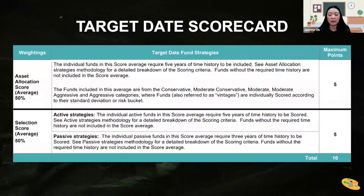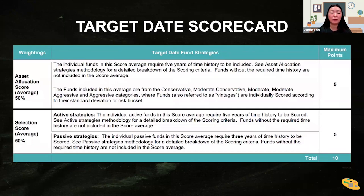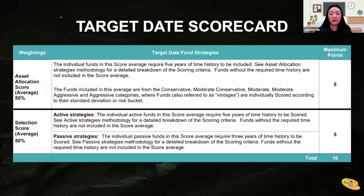The target date scorecard is a separate scorecard worth highlighting quickly because for target date funds, RPAG creates a blended score. It's important to measure TDFs by both how well the manager is able to diversify their portfolio and by the performance of those underlying holdings. So RPAG has created a separate target date fund scorecard which takes a 50-50 weighting of the allocation score as well as the selection score to give you that final composite blended score.